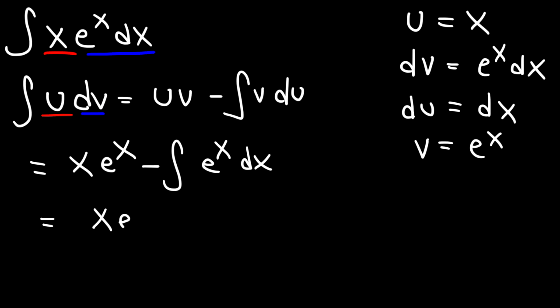And as we said before, the antiderivative of e to the x is going to be the same thing, e to the x, plus some constant c.